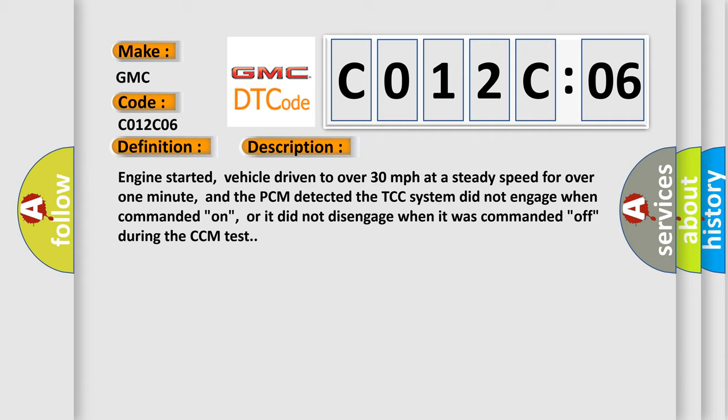Engine started, vehicle driven to over 30 miles per hour at a steady speed for over one minute, and the PCM detected the TCC system did not engage when commanded on, or it did not disengage when it was commanded off during the CCM test.